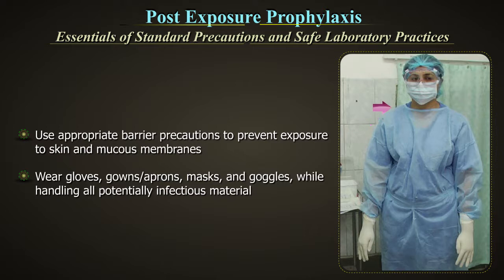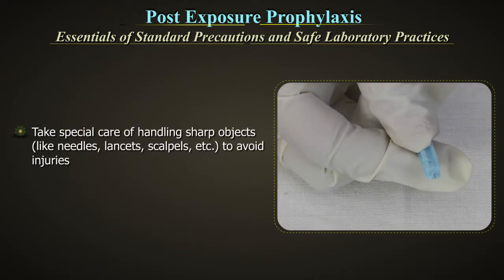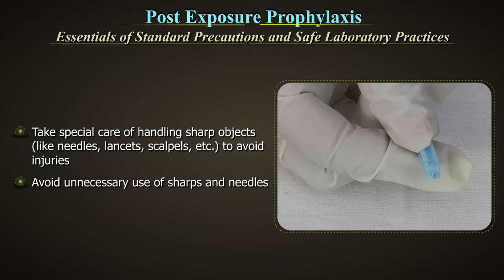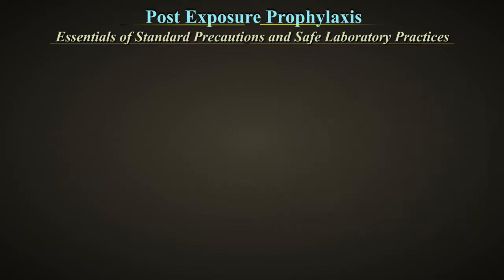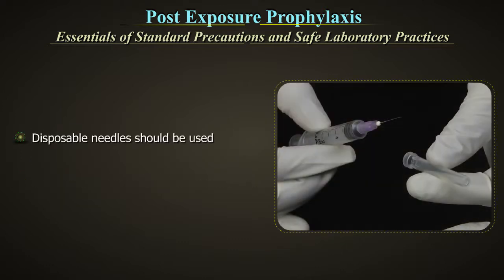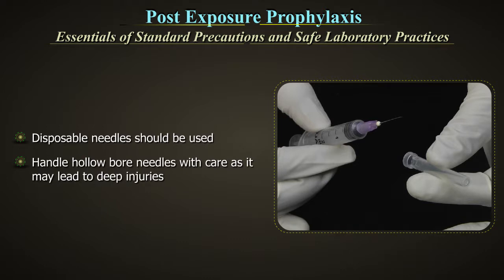The essentials of standard precautions: blood, blood products, all body fluids and materials contaminated with them are considered infectious for HIV, HBV, HCV and other blood-borne pathogens. Use appropriate barrier precautions to prevent exposure to skin and mucous membranes — wear gloves, gowns or aprons, masks and goggles while handling all potentially infectious material.